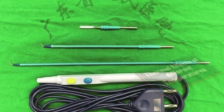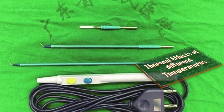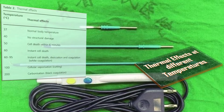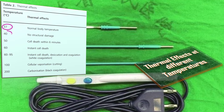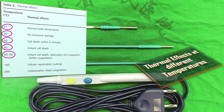The next point is about thermal effects at different temperatures. Normal body temperature is 37°C. At 40°C, there is no structural damage. At 50°C, cell death occurs within six minutes. At 60°C, there is instant cell death. From 60–95°C, we have instant cell death, desiccation, and coagulation — that is white coagulation. At 100°C, there is cellular vaporization or cutting. At 200°C, there is carbonization or black coagulation.